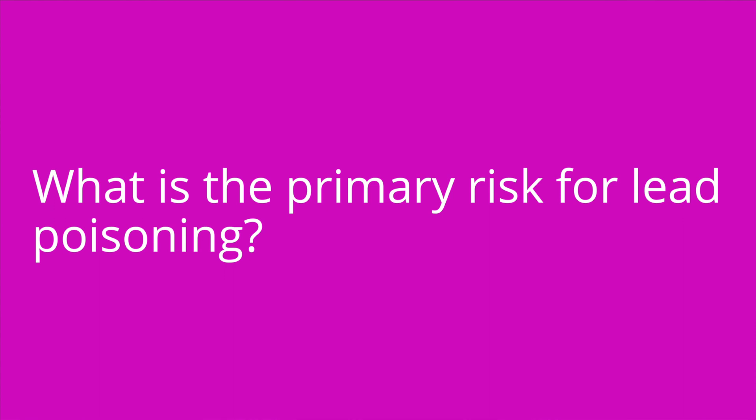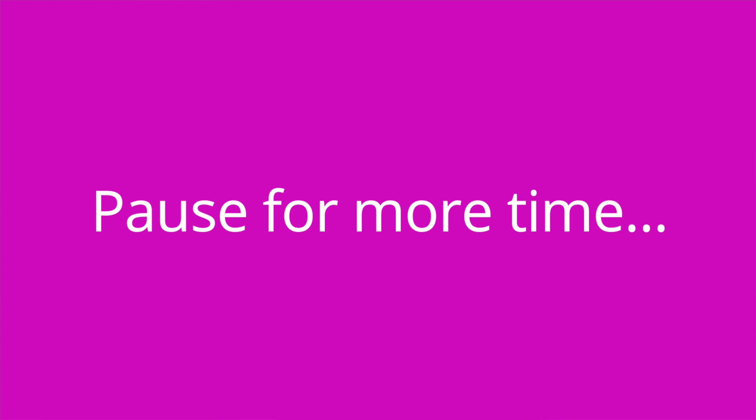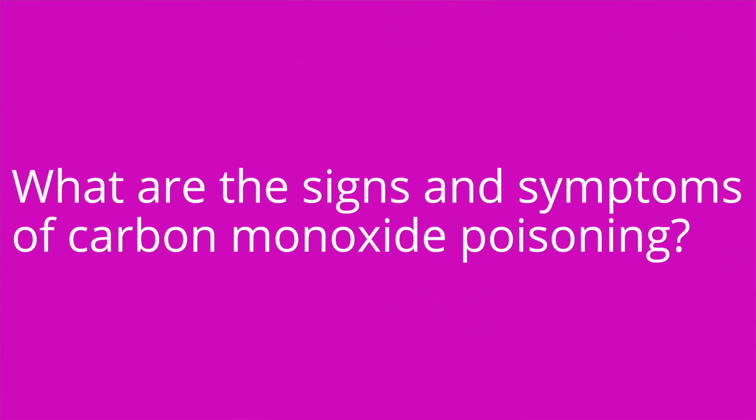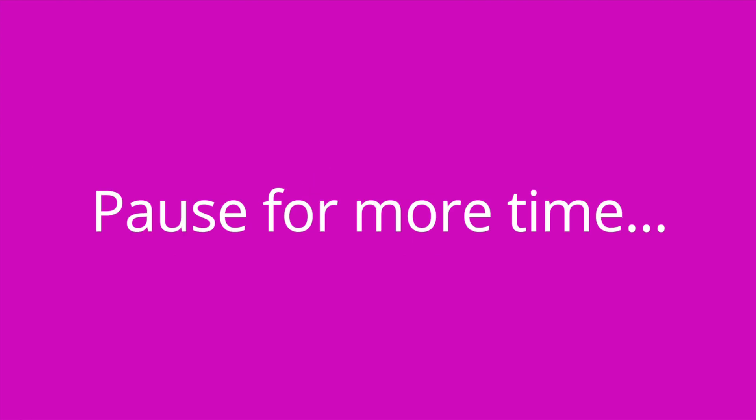That's all the content for this video. Let's check your knowledge with a couple of questions. Define a food desert. A food desert is a geographic location that lacks sufficient access to grocery stores and healthy food options like fresh foods. What is the primary risk factor for lead poisoning? The primary risk factor is housing that was built before 1978, especially during times of renovation. What are the symptoms of carbon monoxide poisoning? Carbon monoxide poisoning can lead to headaches, dizziness, nausea, and confusion. Thank you for studying with me. Next time I'll be talking about vulnerable populations and violence in the community.